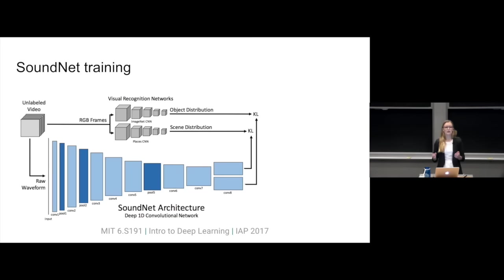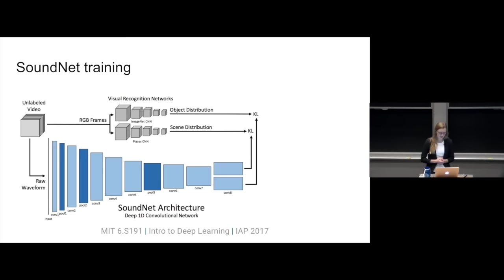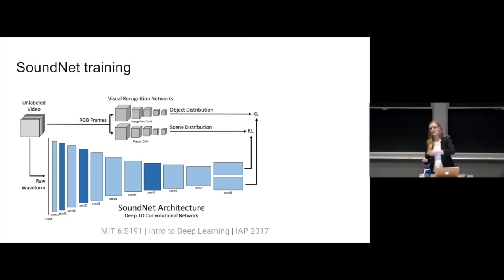The RGB frames are fed into already-trained vision networks. We've got one network trained on ImageNet, which learns object information — for example, there's a zebra in the video. We're also feeding into a PlacesCNN, which has scene information — this is a beach, or this is a park. We can use these vision networks as labels for the video, getting object and scene information basically for free. We can then use this as a label for our sound — if you've got a video of birds, they're probably chirping — and we naturally learn that birds chirp and what birds look like.